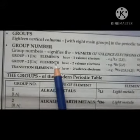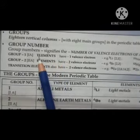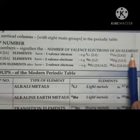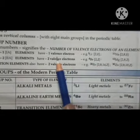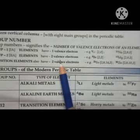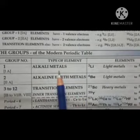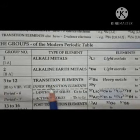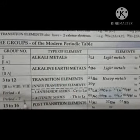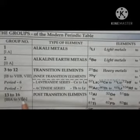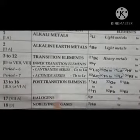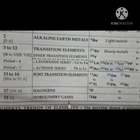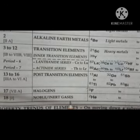Group numbers signify the number of valency electrons. Group 1 elements are called alkali metals; group 2 elements are called alkaline earth metals. Groups 3 to 12 are called transition elements. Groups 13 to 16 are called post-transition elements. Group 17 elements are called halogens, and group 18 elements are called noble gases or inert gases.